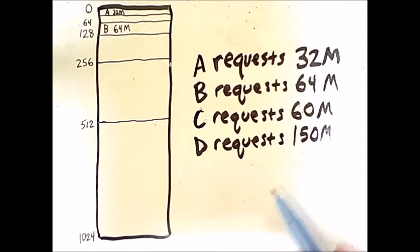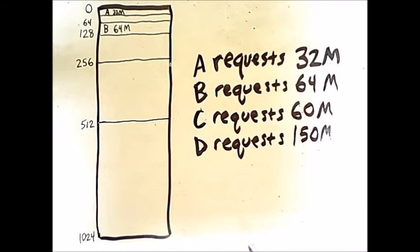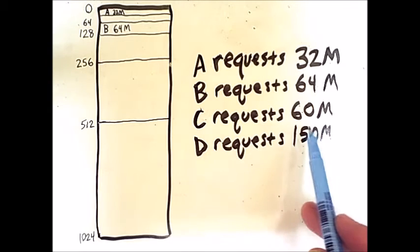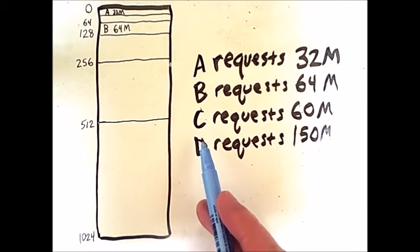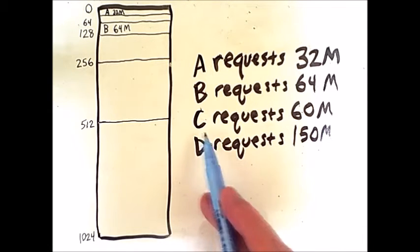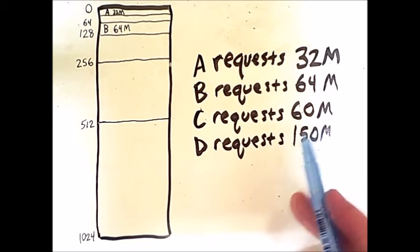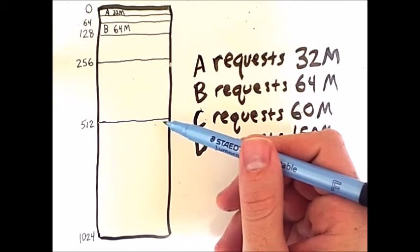Those first two requests happen to be perfect powers of 2, but this process also works for other numbers such as 60. So, if process C requests 60 megabytes of memory, we start in the middle.